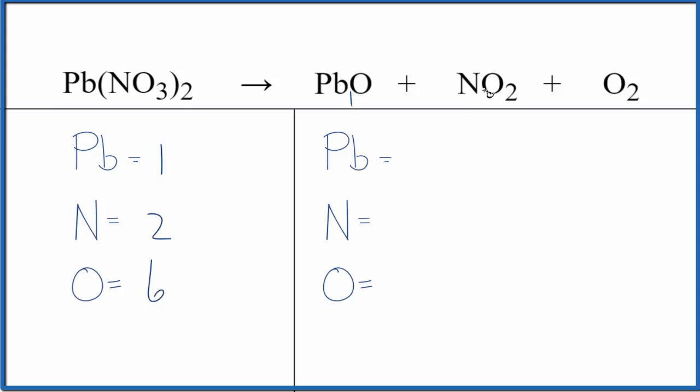We have 1 lead and 1 nitrogen, but then for the oxygens, we have 1 plus 2 plus 2. So we have 5 oxygen atoms.